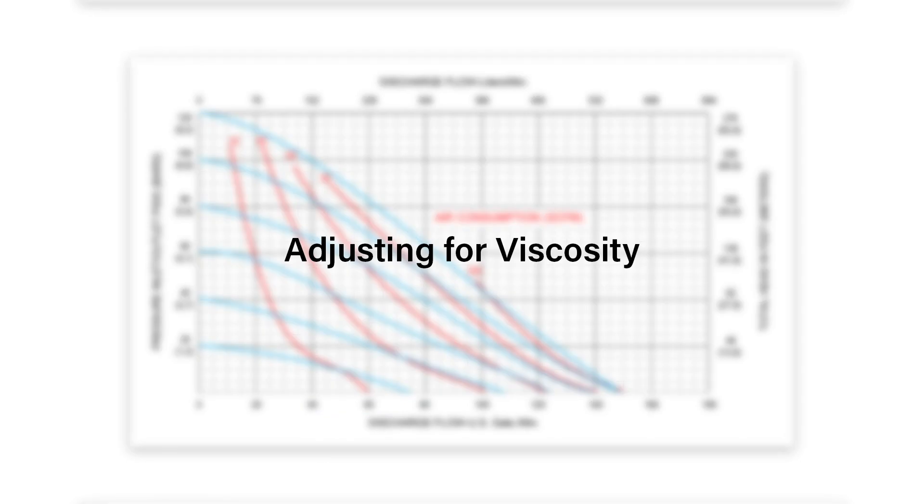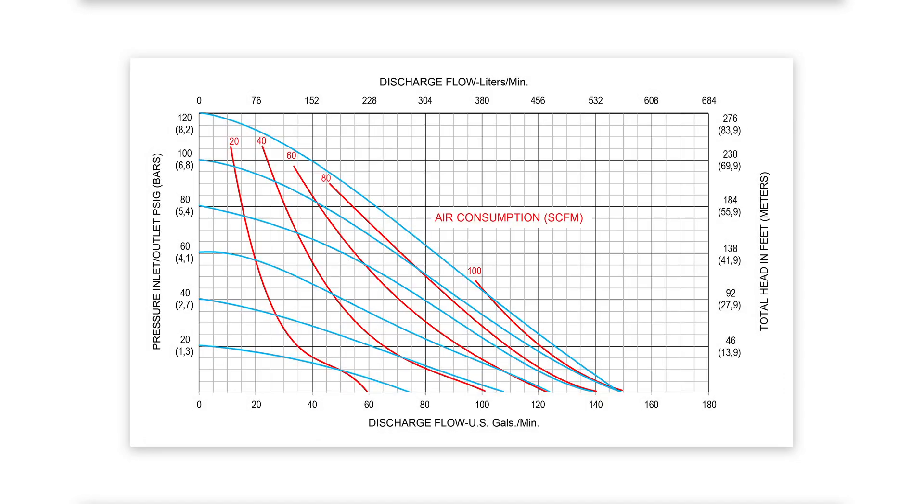AllFlow's performance curves are developed from testing results of AllFlow AODD pumps pumping water. This is the best guide for pumping most fluids up to 2150 centipoise.